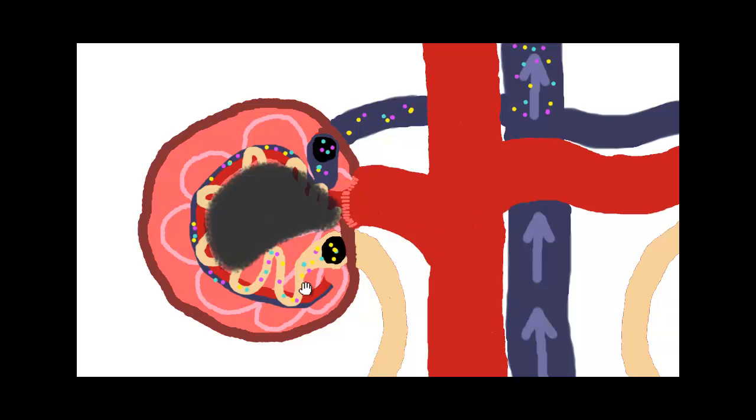We increase the flow, which means more blood gets to go past this little amount of filter we have left. The more times blood passes this filter, the more we can get toxins out of the system, into the urine, and out of the body.